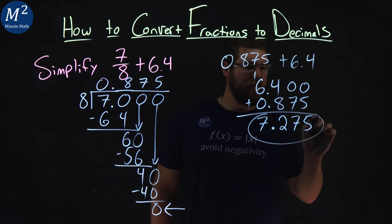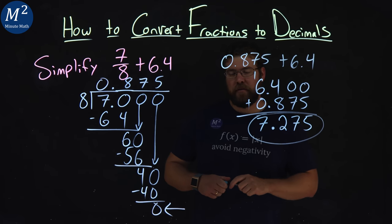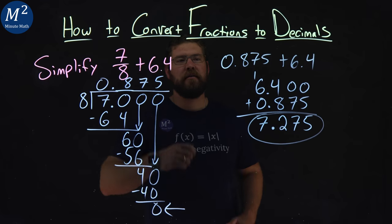And so, 7.275 is the answer when we add 7 eighths plus 6.4.